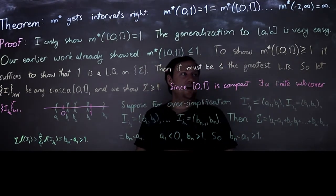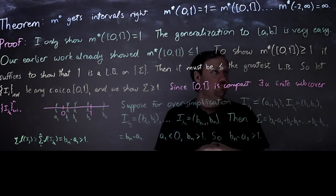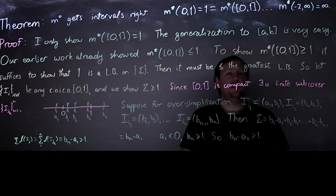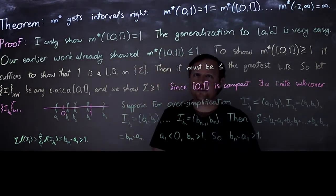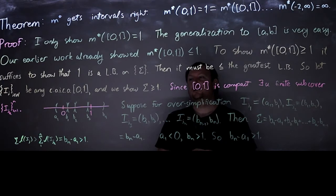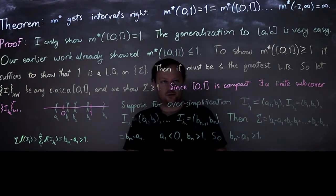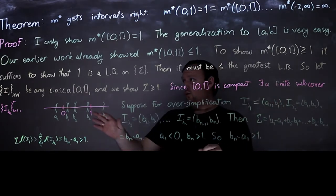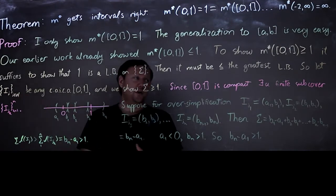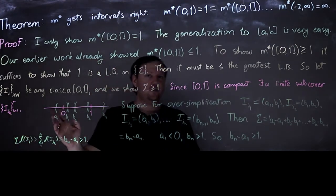Now we have to show the reverse inequality. Whenever you're trying to show that something is less than or equal to an infimum, one strategy is to show that thing is a lower bound on the same set over which you're taking the infimum. So let's show that 1 is a lower bound on the set of all overestimates. Since M* is the greatest lower bound, if 1 is a lower bound, then M* must be greater than or equal to 1. Since [0,1] closed is compact, with any chosen open interval cover there must exist some finite subcover — call it I_{j_k} for k running from 1 to N.